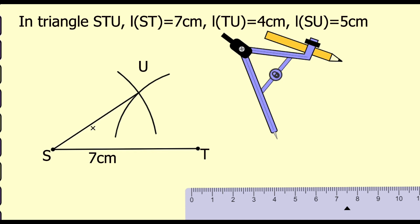Length SU is 5 cm and length TU is 4 cm. This is our required triangle.